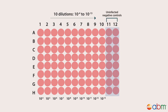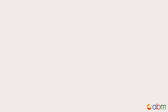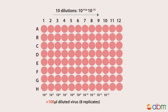For uninfected negative controls, add 100 microliters of fresh complete media to each well of the last two columns to measure uninfected cell viability. Next, carefully pipette 100 microliters of the diluted virus to each well of the corresponding column on the 96-well plate — 8 wells per column, which equals 8 replicates. Each column of the plate should be infected with the corresponding dilution.